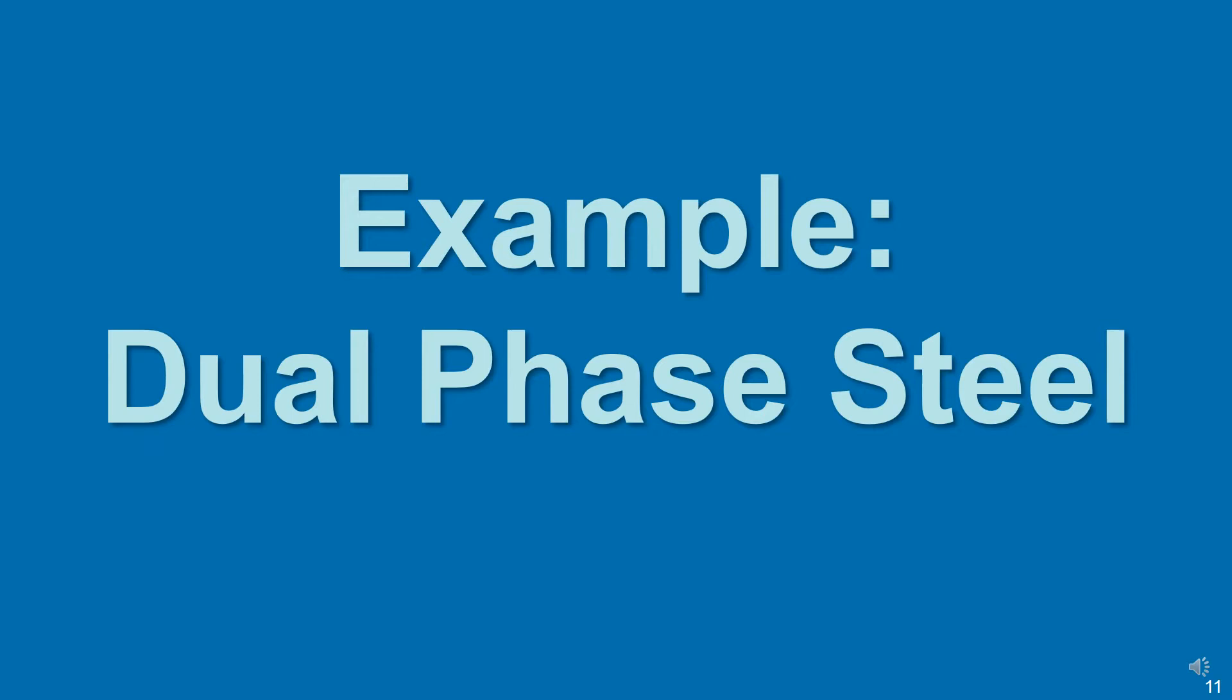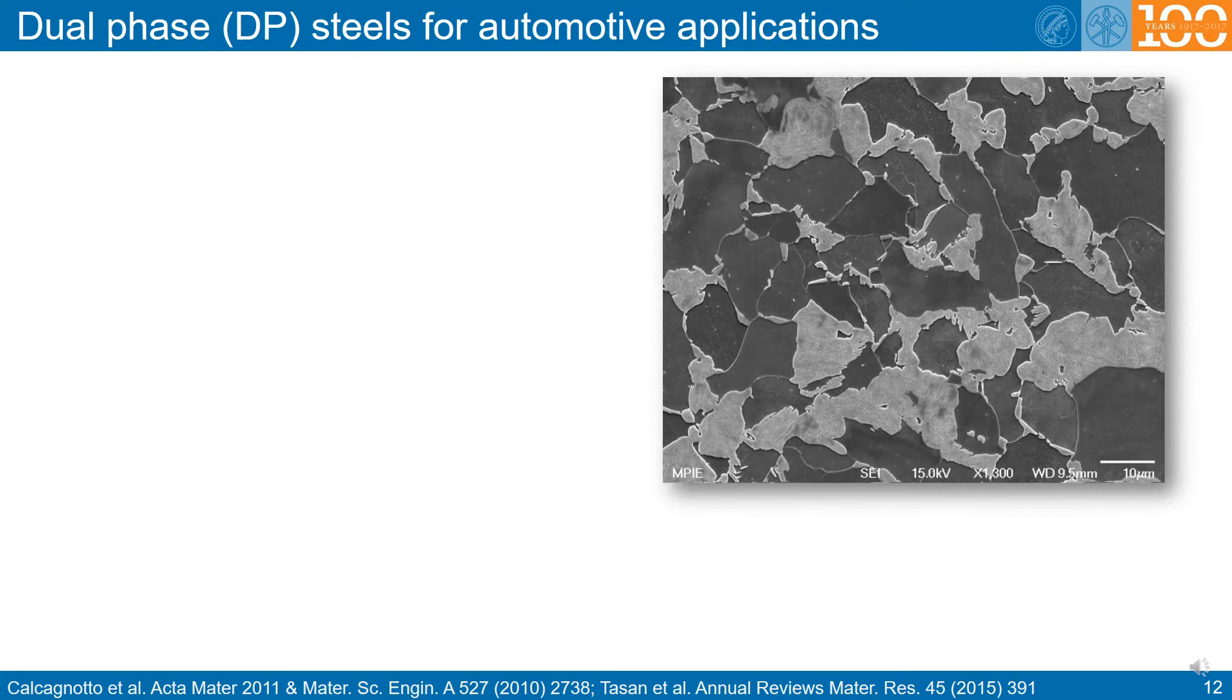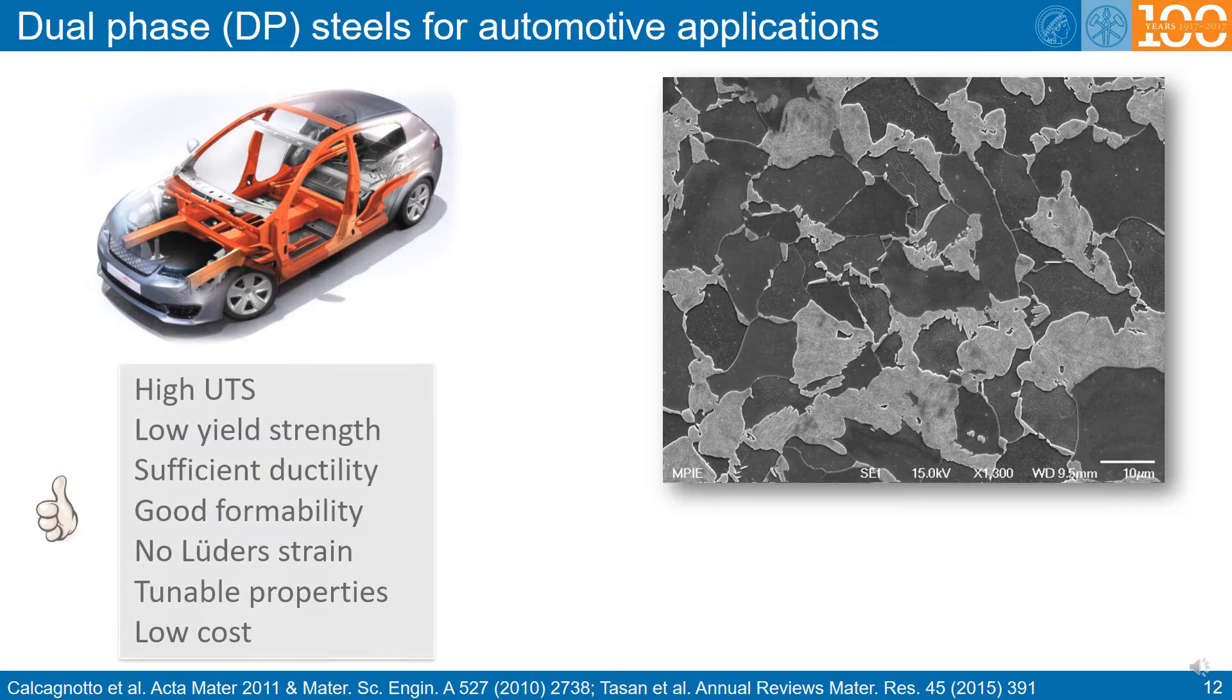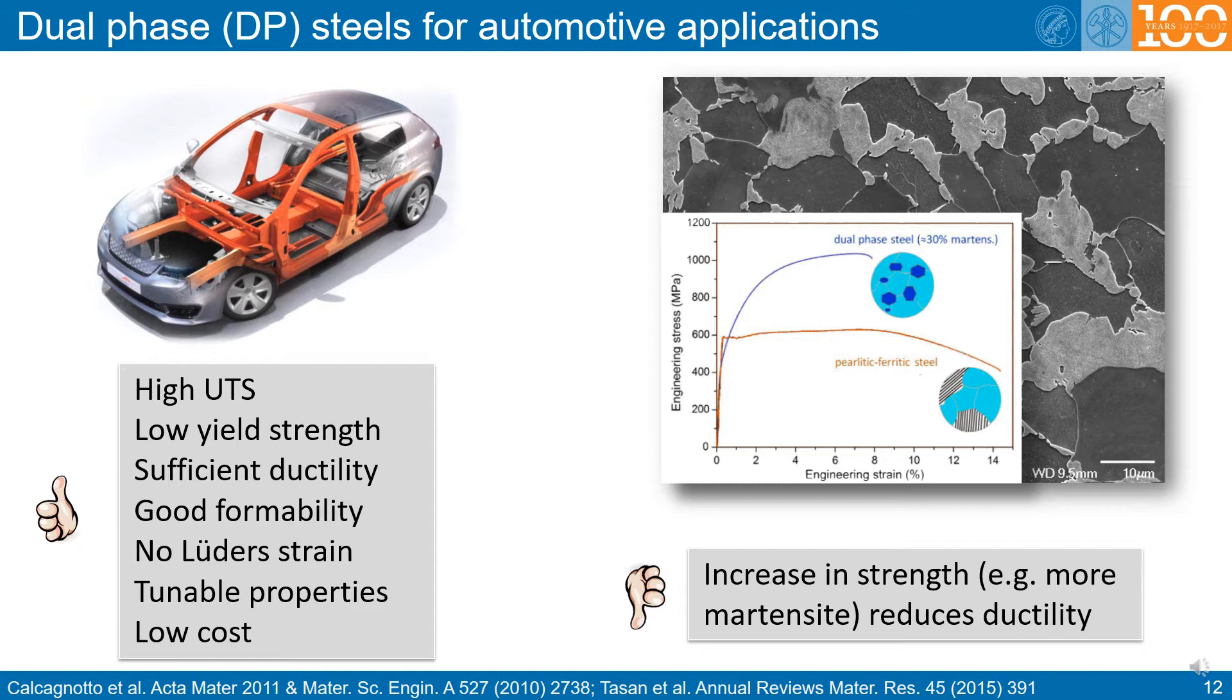Let me give you an example from the field of dual phase steels. Here you see a typical microstructure of such a material consisting of body centered cubic ferrite and the shaded martensite which is a transformed iron carbon ingredient in the microstructure. These are very attractive materials that are for instance used for high strength components of cars. They have a high ultimate tensile strength called UTS. They have a low yield strength which is good for forming operations. They have just about sufficient ductility for forming, good formability, no Luders bending, that means no dynamic strain aging. And they have quite tunable properties through the carbon content and through the volume fraction of the martensite and they are really low cost materials. However, when you want to increase their strength further, you have to enhance the volume fraction of the martensite and that would reduce ductility for instance. Let us zoom in.